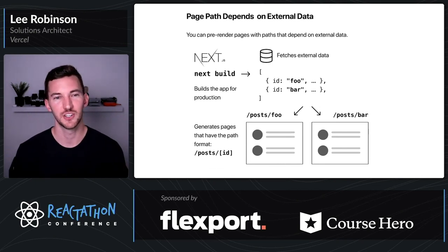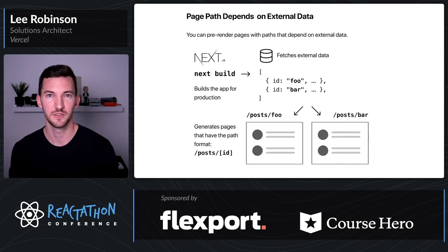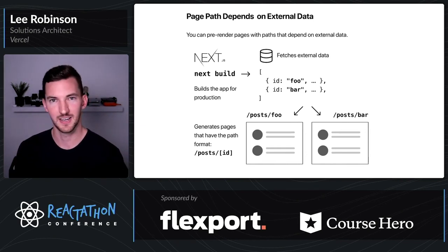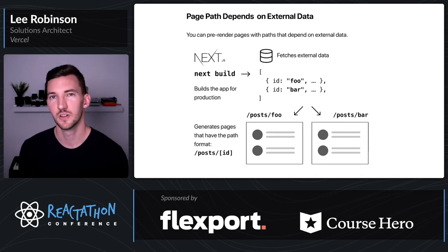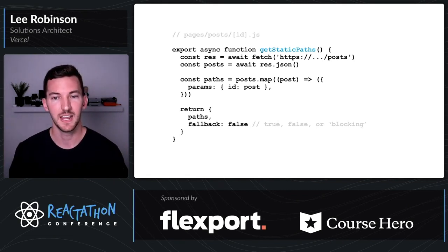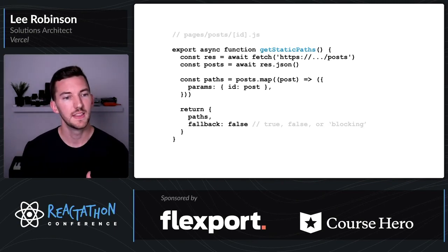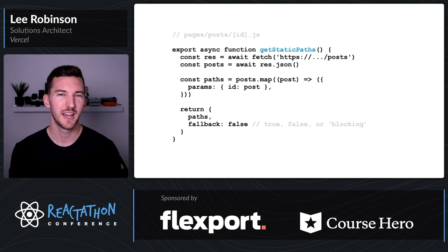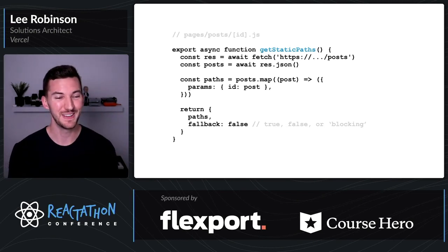There's another thing to consider with static generation: when your page paths depend on some external data. getStaticProps is one piece of the puzzle, but if you want to render out a bunch of different posts and need multiple different URLs for those posts, when you build the app you have to fetch all available posts and generate a path for each ID. We can do this using getStaticPaths, another function exported from your file. You fetch posts from an API, iterate over them to tell Next.js all the different IDs available, return those paths, and set fallback to false — meaning if one of those IDs isn't available, it will 404. For more on fallback methods, check out the data fetching documentation.